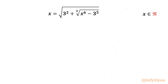Welcome back to Infigr, my dear friends. In this video we have one very interesting question on radical equations. The given equation is x equals square root of (3² + ∛(x⁶ − 3⁵)), and we are going to calculate real solutions only.